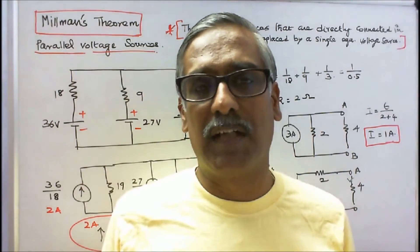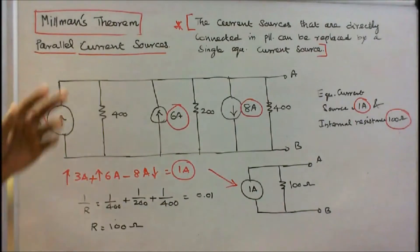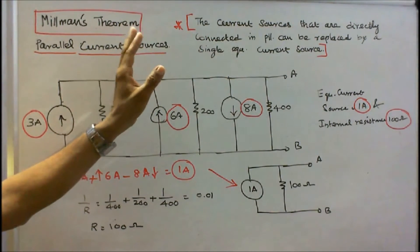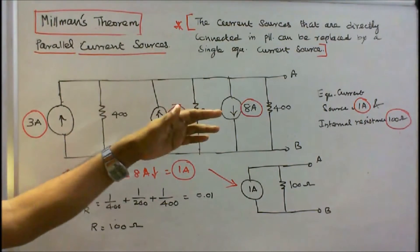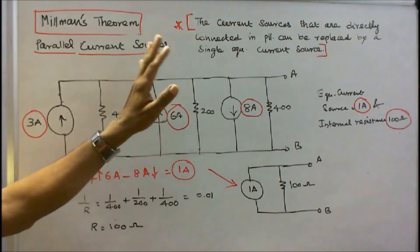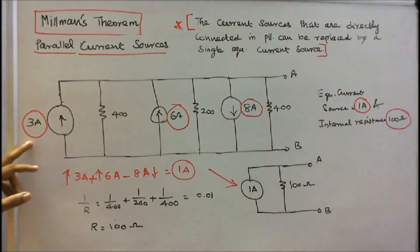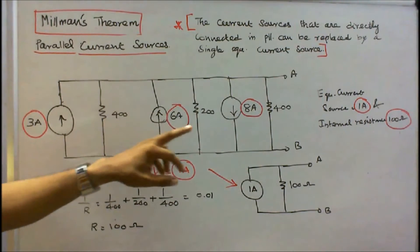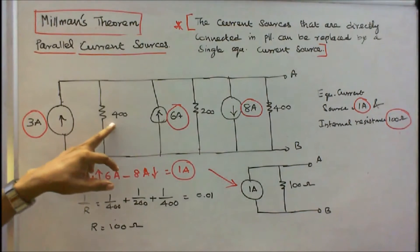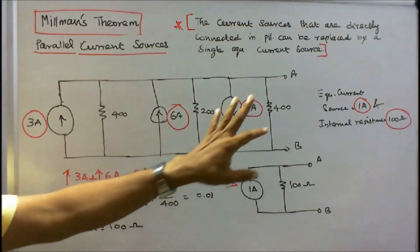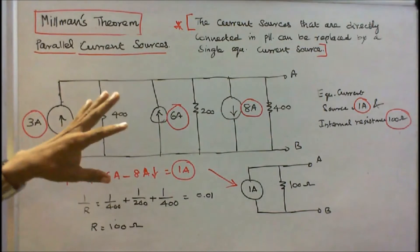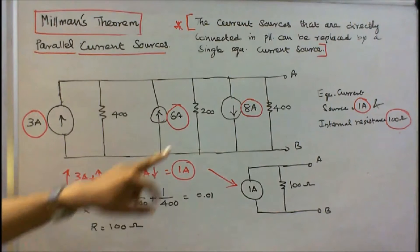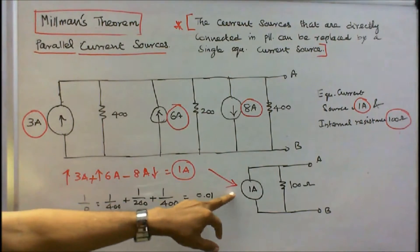Parallel Current Sources: The current sources that are directly connected in parallel can be replaced by a single equivalent current source. Here we have 3 Amps upward, 6 Amps upward, and 8 Amps downward, with resistors of 400 Ohms, 200 Ohms, and 400 Ohms. To convert to a single equivalent current source: 3 plus 6 equals 9, minus 8 equals 1 Amp. So the equivalent current source is 1 Amp.